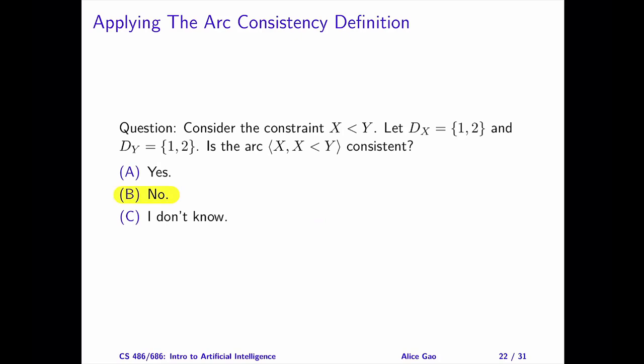The correct answer is b. The arc is not consistent. To verify the definition, we start by picking any value of x, and try to find the value of y, such that the two values satisfy the constraint. If x is 1, then y is 2 satisfies the constraint. If x is 2, then no value of y satisfies the constraint. Since we cannot find the corresponding value of y for x equals 2, this arc is not consistent.